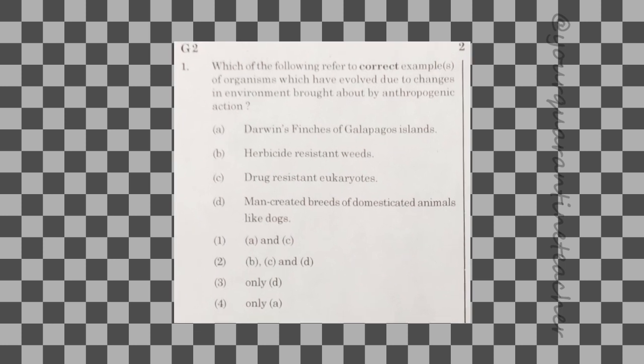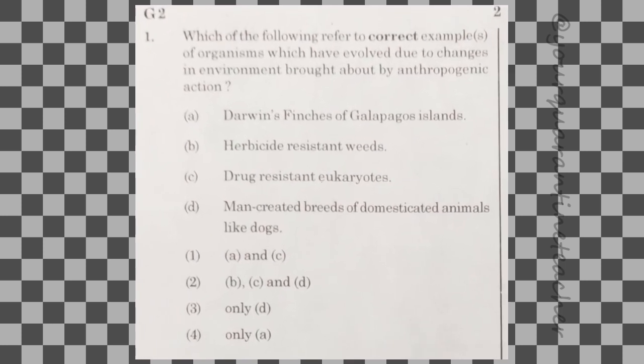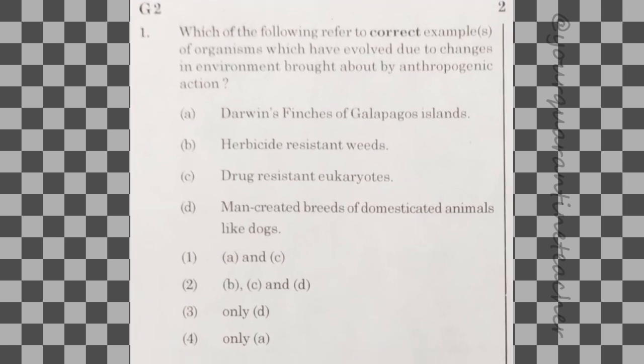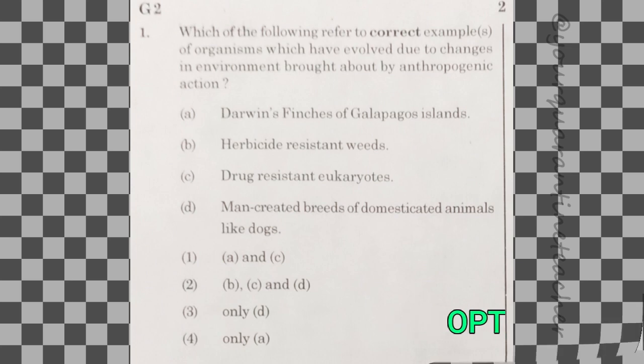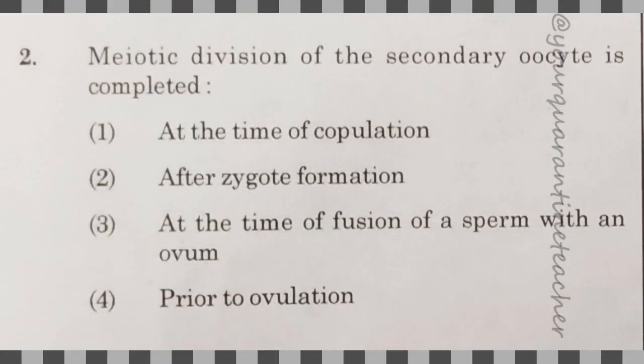The first question: which of the following refers to correct examples of organisms which have evolved due to changes in environment brought about by anthropogenic — that is, man-made — action? Option D is correct. The answer is option 2.